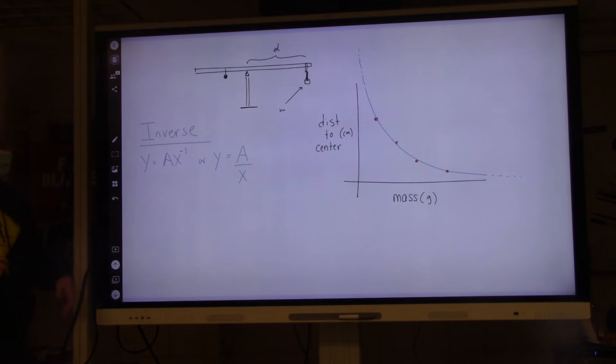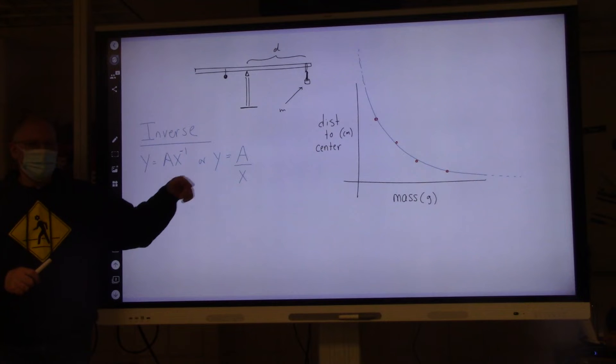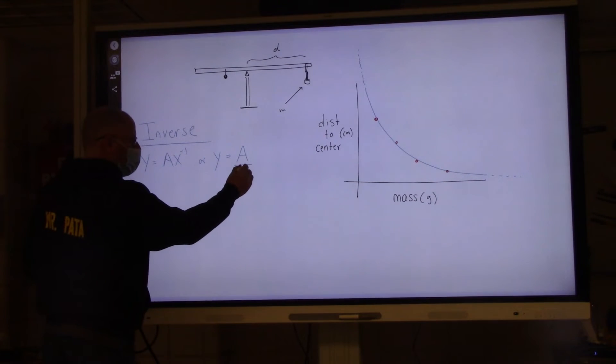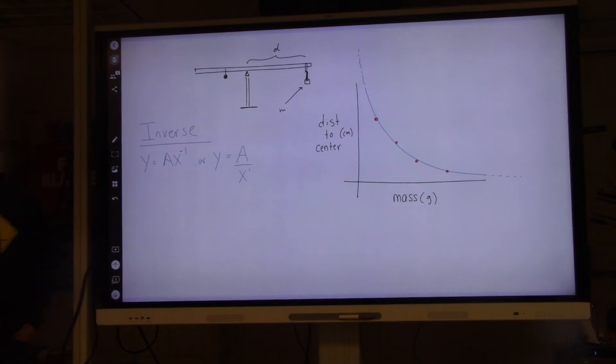So the exponent is negative one. The exponent is negative one, which means put it at the bottom, but the exponent is one.